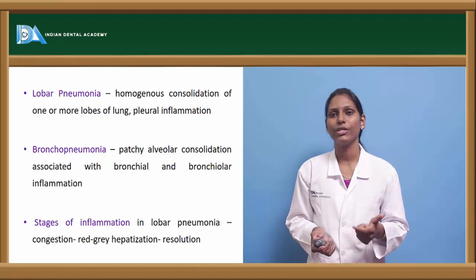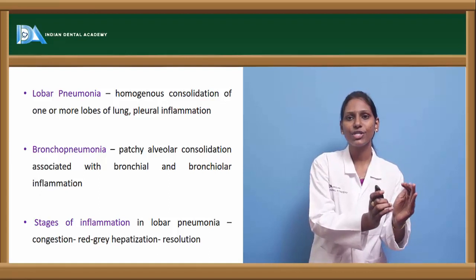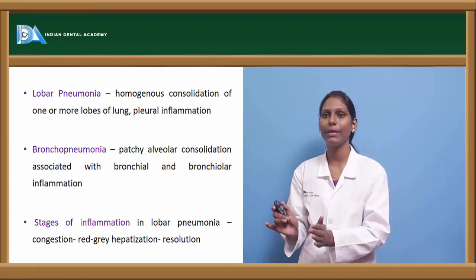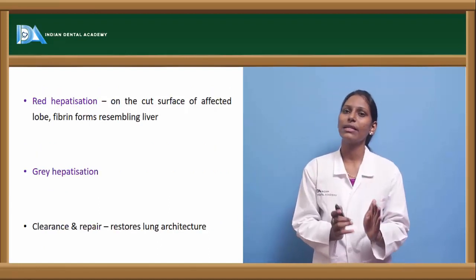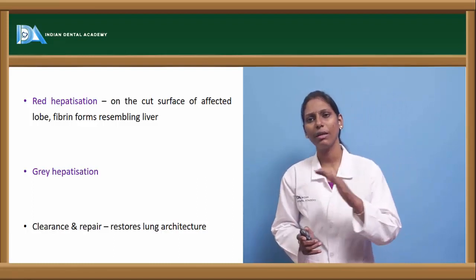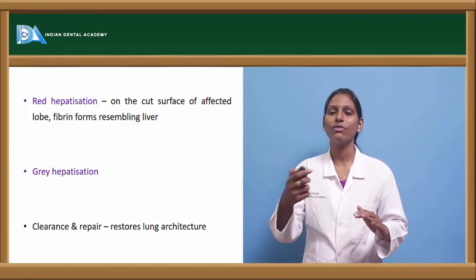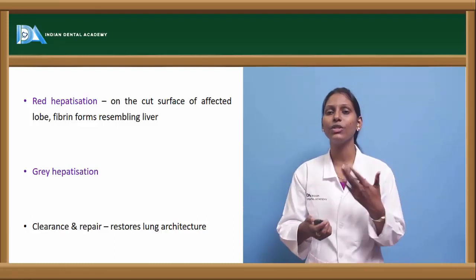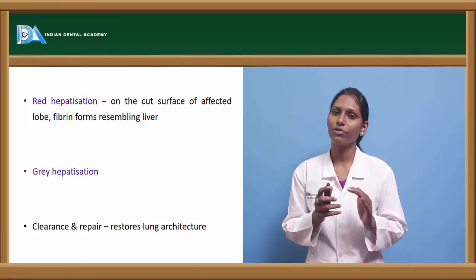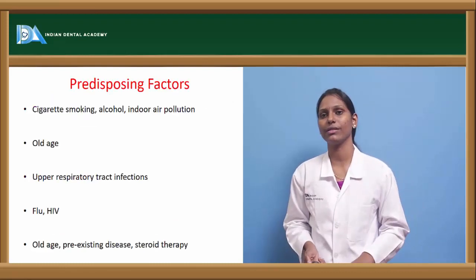Coming to the stages of inflammation in lobar pneumonia, initially there is a congestion phase which progresses to red hepatization, followed by grey hepatization, and then resolution. In red hepatization, on the cut surface of the affected lobe, fibrin is formed which resembles a liver. In grey hepatization, this converts to a grey color. Later, in the process of clearance and repair, this is removed and the normal lung architecture is restored.